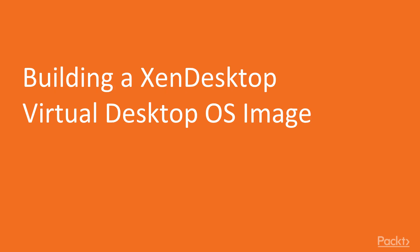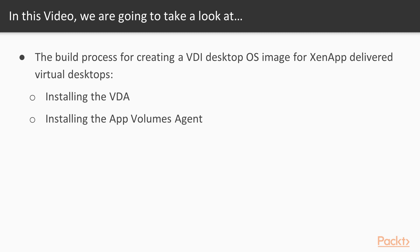So let's move on to the first video of this section and look at how we build the desktop operating system. We're going to complete the tasks required for building the desktop operating system. We're not actually going to follow the install of the OS, as that's out of scope for this course. For this video, we'll assume that you have already built an operating system image that contains both the Citrix VDA and the App Volumes agent and is now ready to deliver to our end users.